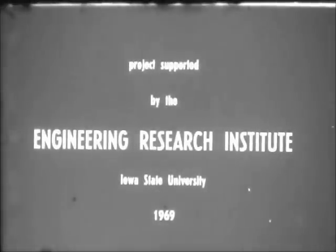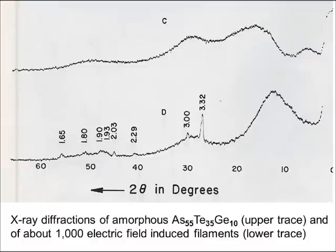This work was done at the Engineering Research Institute of Iowa State University in 1969. We want to see if the filament is truly crystalline. Here, we manually grew about 1,500 filaments, each 25 mil long on a tricadionite surface. Now we compare X-ray diffraction patterns of a surface without filament and one with 1,500 filaments. Without filaments, a broad peak typical of amorphous material is shown. With the filaments, at least seven crystalline peaks were detected, indicating that the filaments are crystalline in nature.